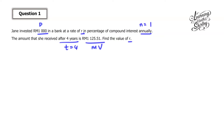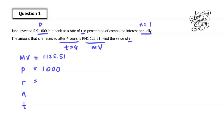First, we extract all the information from the question and list it down. MV, P, R, N, and T. So the matured value is 1,125.51. The principal is 1000. R is unknown — we just leave it as R. N equals 1, and T is 4 years.